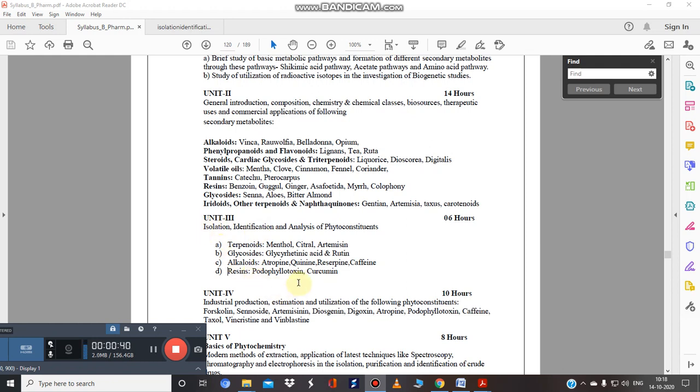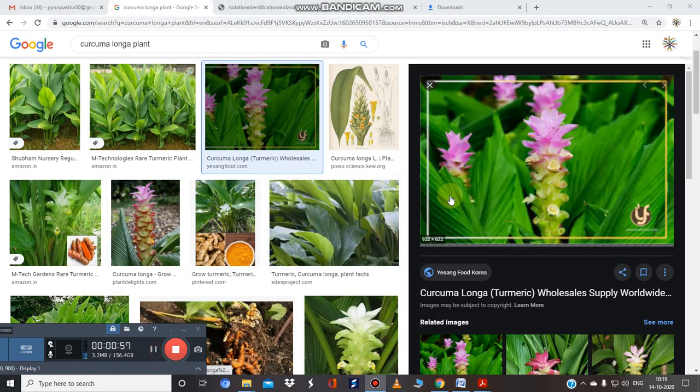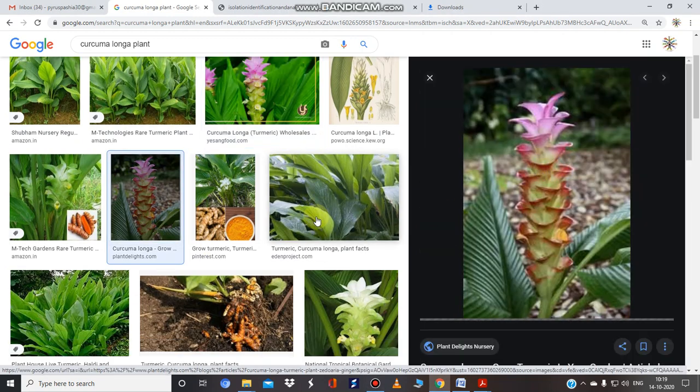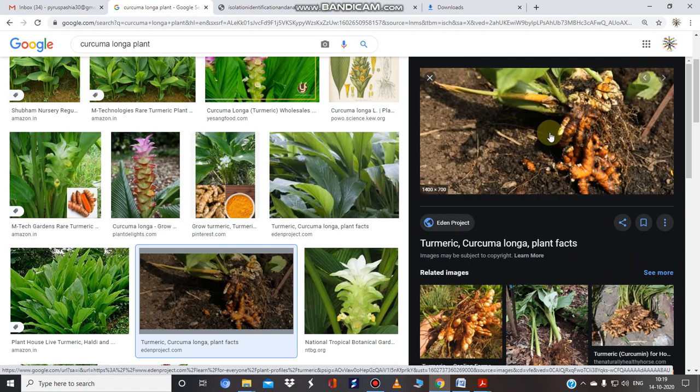Those two phytoconstituents are podophyllotoxin and curcumin. Curcumin is obtained from haldi, Indian saffron, that is Curcuma longa belonging to the family Zingiberaceae. Here is the plant of Curcuma longa, and the part used is the rhizome.